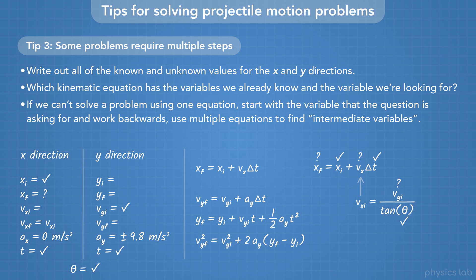But if we don't know the initial Y velocity, then we need to find that, maybe using another kinematic equation. If we know all of the other variables, then we can start with that equation and work backwards. We find the initial Y velocity, then we find the initial X velocity, and then we can find the final X position.